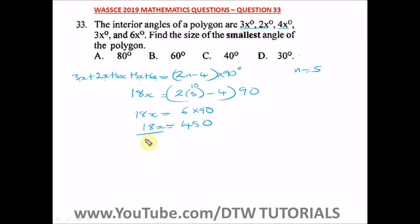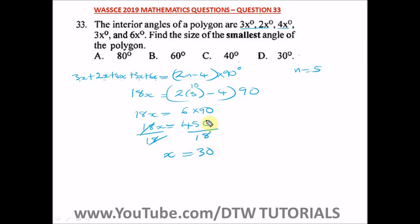So we have 18x = 540. To find x, we divide both sides by 18. 540 divided by 18 gives us x = 30.